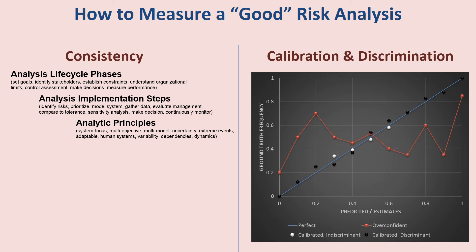The white dots show the results of an individual who is very well calibrated — their predictions are very close to the blue line. When they estimate events at 60% probability, they happen about 60% of the time; at 30% probability, they happen about 30% of the time. But notice these are clustered around the 50-50 range. So this person is very well calibrated, but they're not very discriminative — they're not producing meaningful predictive power or predicting whether events will happen or not.